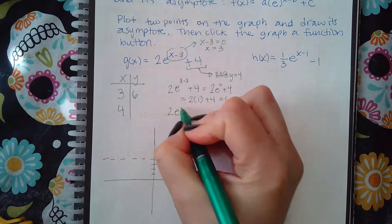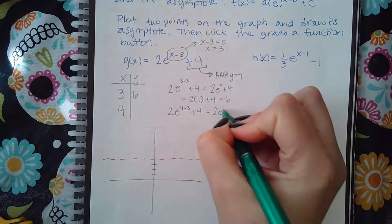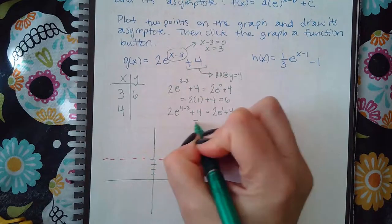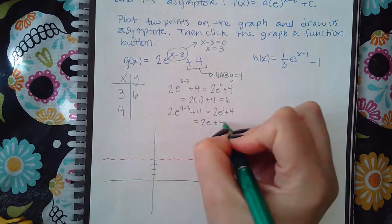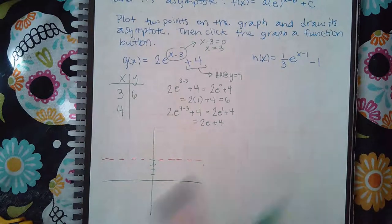Now for the other one, it's 2e to the 4 minus 3 plus 4. Here I get 2e to the one plus four, or 2e plus four. I can't simplify that any further without getting a decimal point.